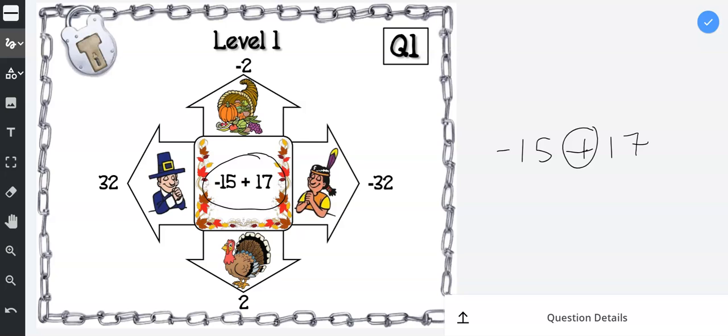The signs are the same, you add. Or if the signs are different, which is true in this case, we have a negative 15 and a positive 17. The signs are different, you subtract.